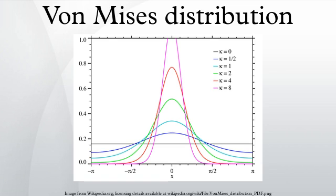In probability theory and directional statistics, the von Mises distribution is a continuous probability distribution on the circle. It is a close approximation to the wrapped normal distribution, which is the circular analog of the normal distribution.